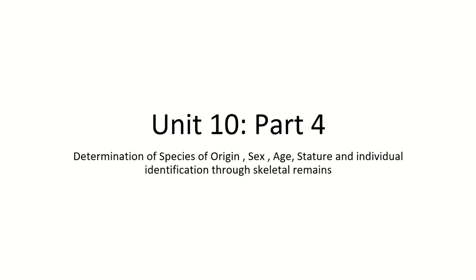Hello and welcome back to Vidhi Vigyan. This is part 4 of unit 10, UGC NET/JRF Forensic Science. In this part we will discuss the determination of species of origin, sex, age, stature, and individual identification through skeletal remains.